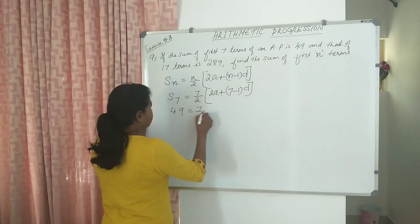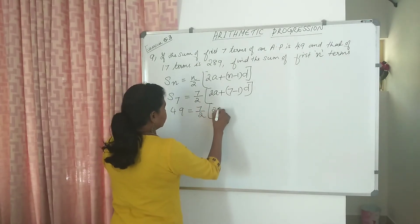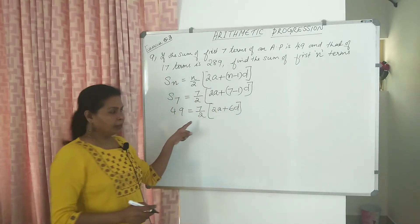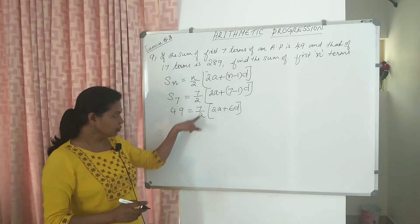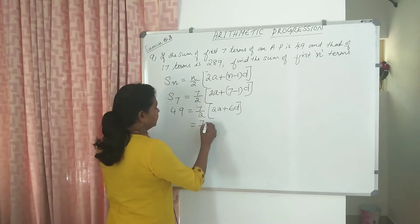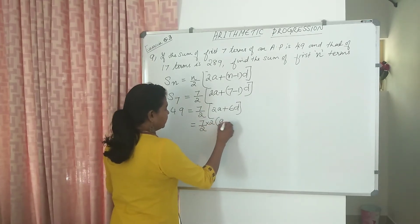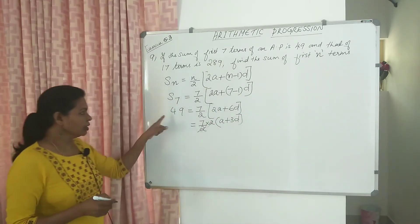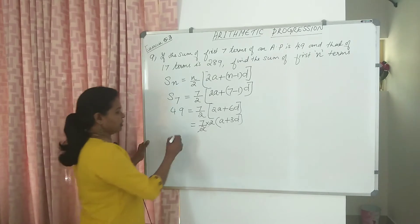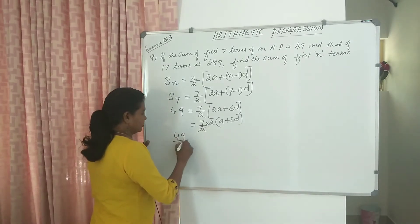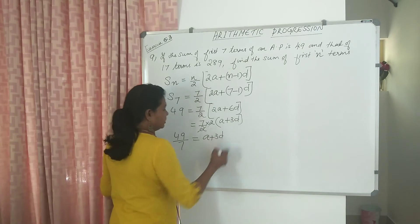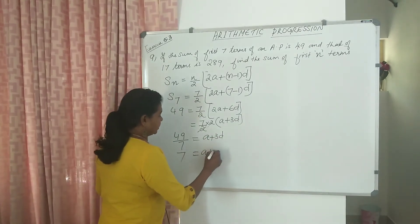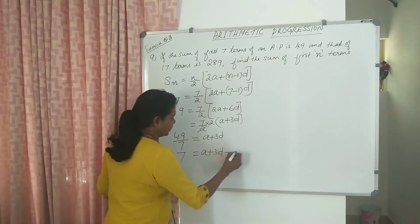49 equal to 7 by 2 into 2A plus 6D. These two terms: 2 is common, 2 canceling. 7 by 2 into 2 common, we get A plus 3D. 2 does cancel. 49 divided by 7 equal to A plus 3D. So 49 by 7 is 7 equal to A plus 3D. One equation is here.